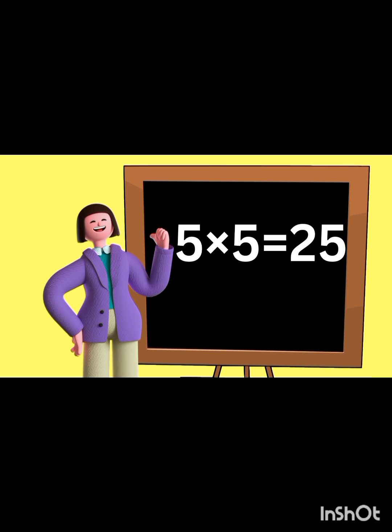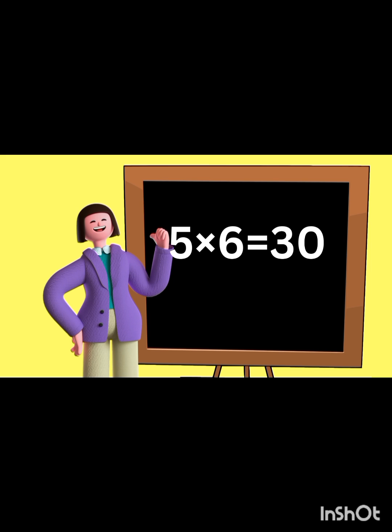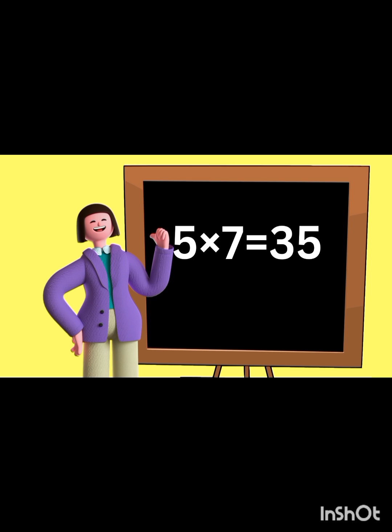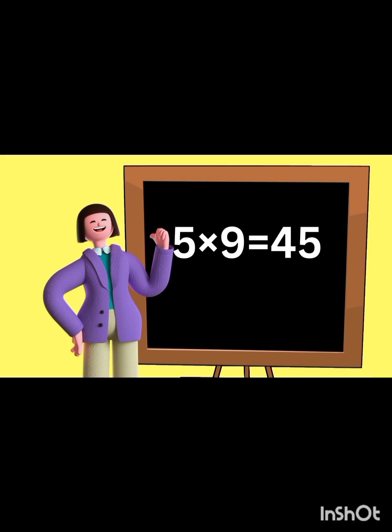Five fives are 25. Five fives are 25. Five sixes are 30. Five sixes are 30. Five sevens are 35. Five sevens are 35. Five eights are 40. Five eights are 40. Five nines are 45. Five nines are 45. Five tens are 50. Five tens are 50. Hope you have learned with me!